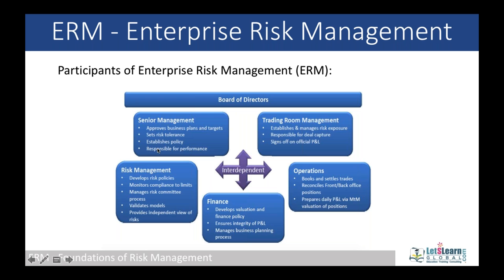The objectives of risk management include the efficiency and effectiveness of business operations, which continuously improve. What happens is the quality improves, the cost is controlled, and the output is higher in terms of the input. This we call productivity — with low input we can expect high output. It can be service, production, or whatever — efficiency and effectiveness of business operations.